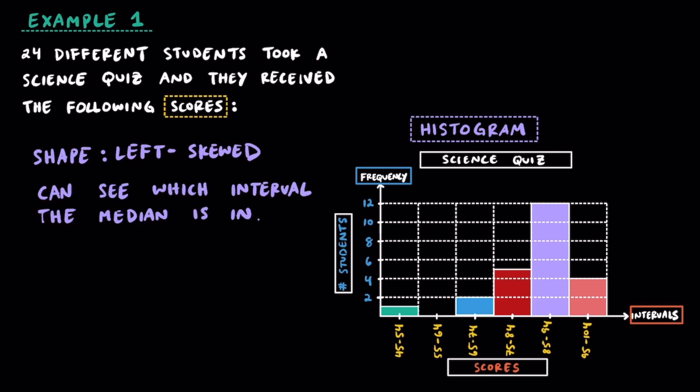Just another couple thoughts here. When you're looking at a histogram, you can see which interval the median is in, but you cannot see which interval the mean or the mode is in.